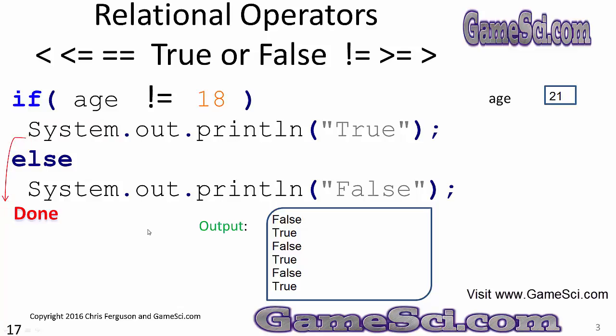That's all six relational operators. Keep in mind, relational operators return true-false values, and those true-false values can be used in if and if-else statements to determine which code executes. That's the whole point — deciding which code executes. That's what makes a computer a programmable machine: every time the software runs, it can decide to execute a different section of code.